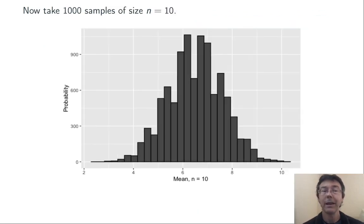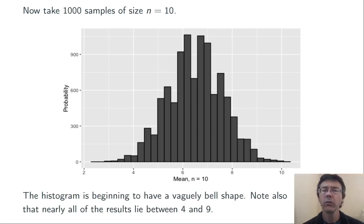Let's repeat that exercise, but now with samples of size 10. Here are the results with 1,000 samples. The histogram is beginning to have a vaguely bell shape. Also notice the spread is starting to decrease. Nearly all the results are between 4 and 9.